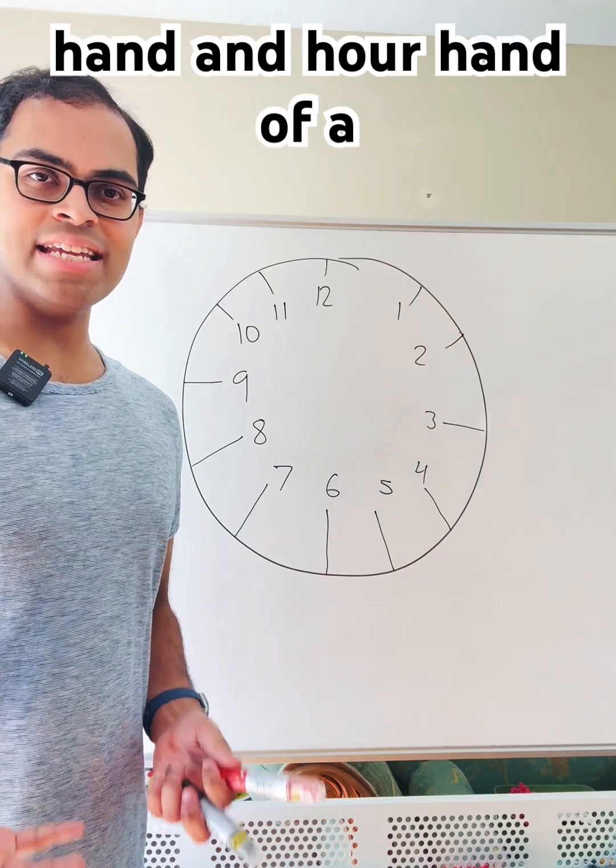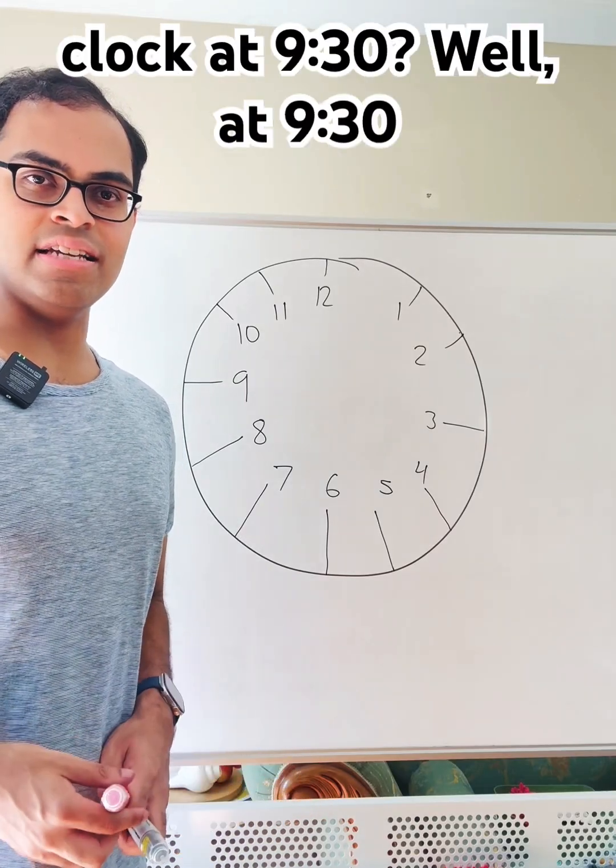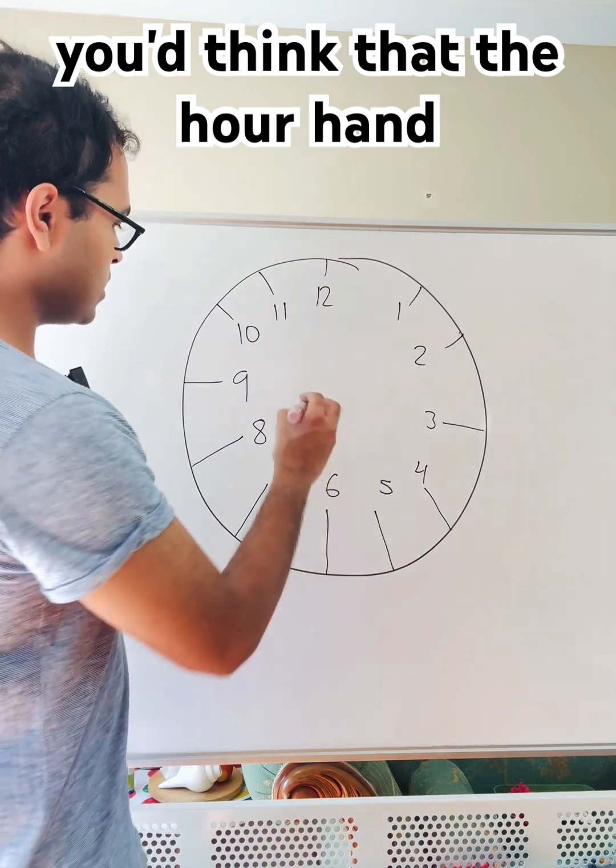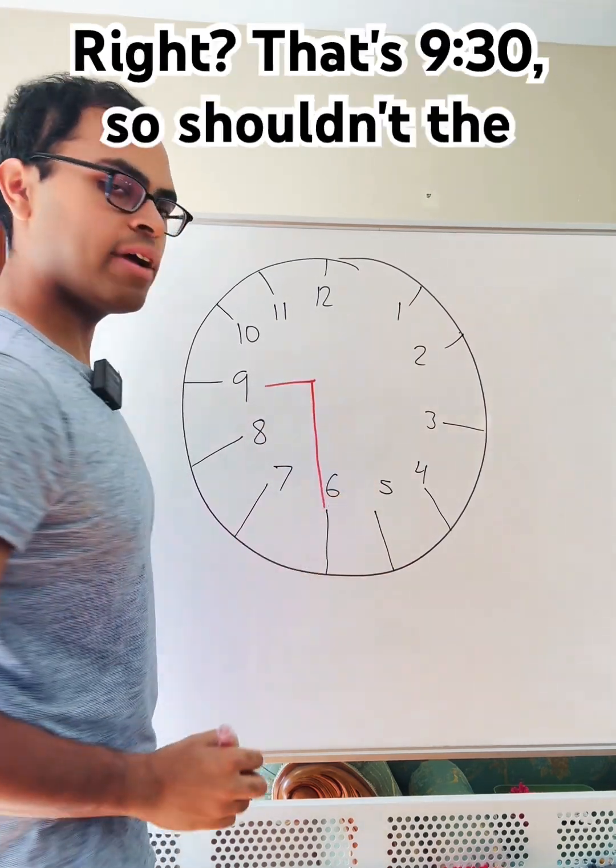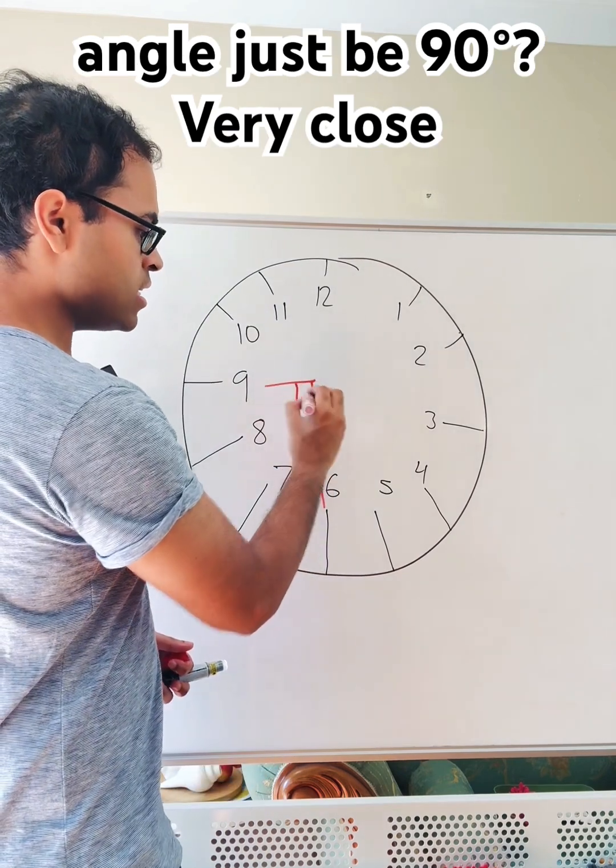What's the angle between the minute hand and hour hand of a clock at 9:30? Well, at 9:30, you'd think that the hour hand will be at 9 and the minute hand will be at 6, right? That's 9:30. So shouldn't the angle just be 90 degrees?